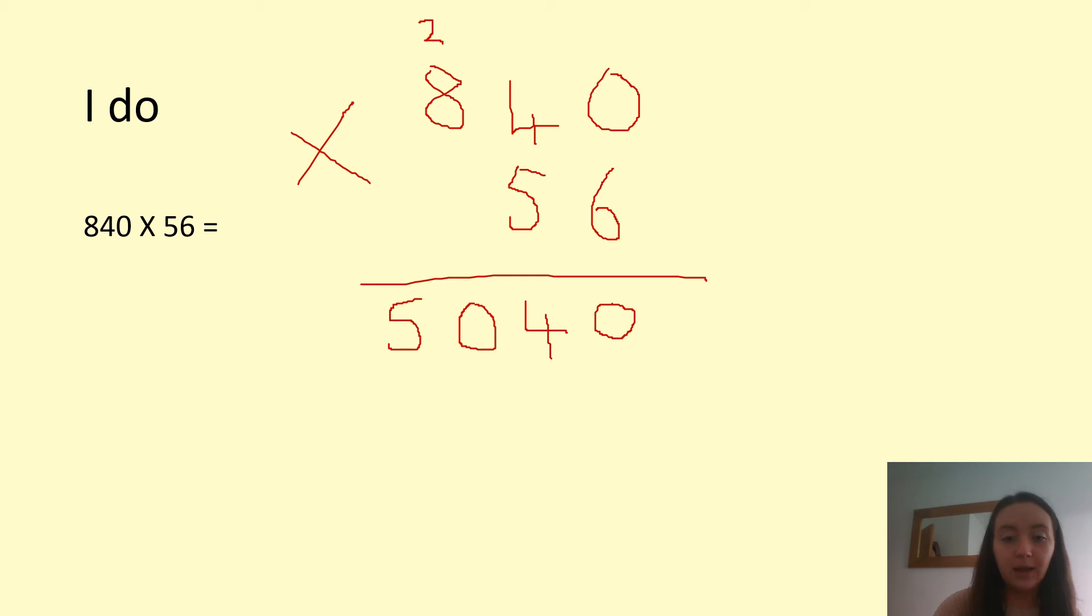Now, we need to remember to add in our placeholder before we do anything else. Now that we've got that, we can do five times zero, which I'm sure you know the answer by now. Next, we've got five times four, which is 20. So the zero goes here and we carry another two over. OK, so we've just done five times four, which is 20, we've carried the two. So we need to remember that when we now do five times eight, which is 40, remembering that two, we add it on at the end. So it's 42.